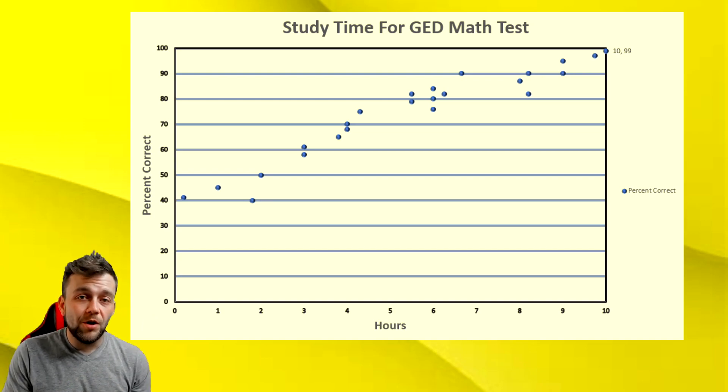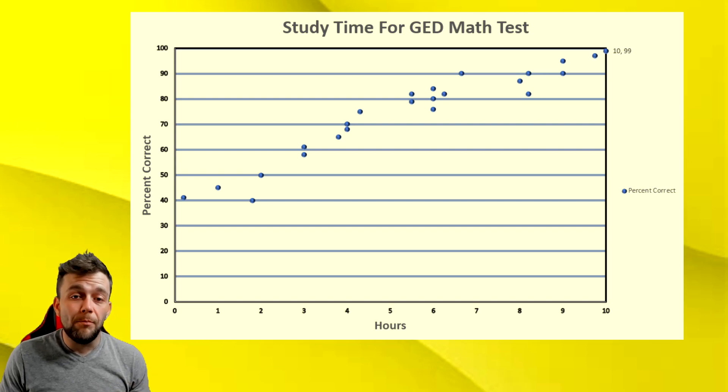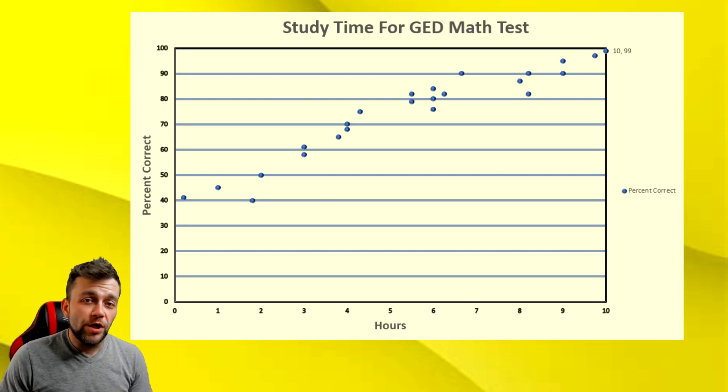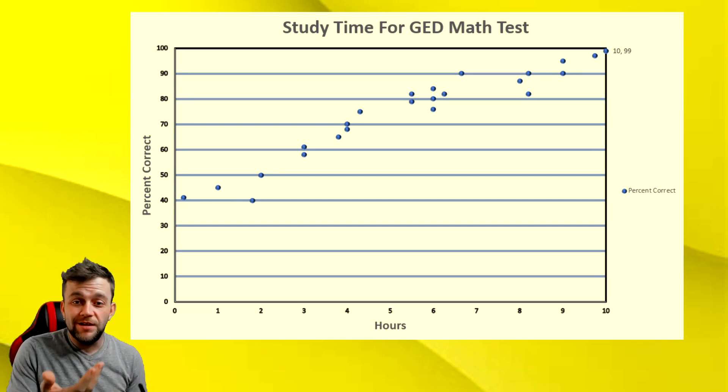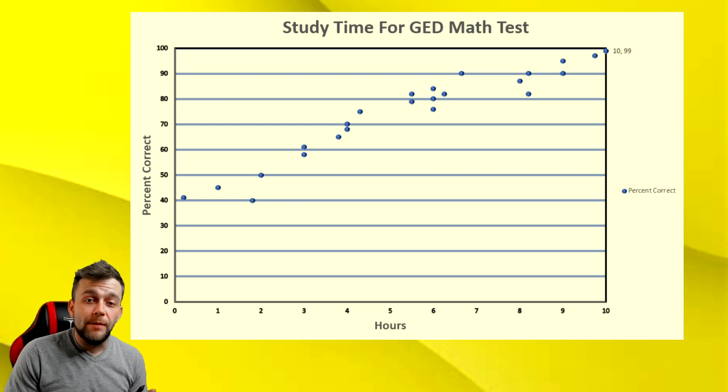And as you can tell, there is what is called a correlation. So a correlation is the definition of a relationship between two different types of data. What this is showing is a positive correlation. It's moving up from left to right.